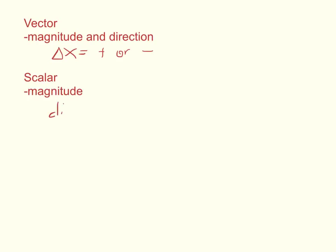Distance, however, is a scalar because it's just a path length — how far did we go? You can't have a negative distance; it's the total length of the path, so it always adds up to a positive number. We need to keep in mind the difference between a vector and a scalar. Vectors can be positive or negative, and we use those signs to indicate direction. We shouldn't be afraid of negative numbers — when they appear in a real-life kinematics situation, all they're telling us is something about direction.